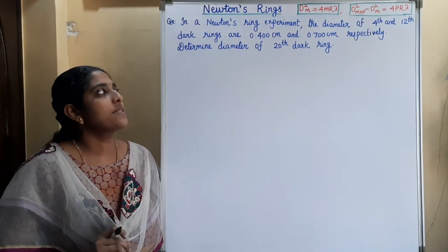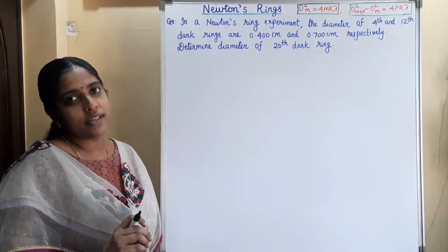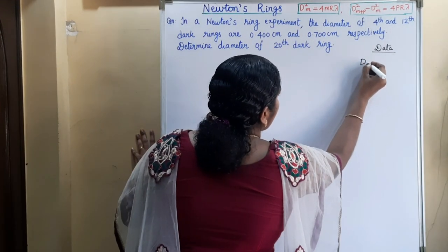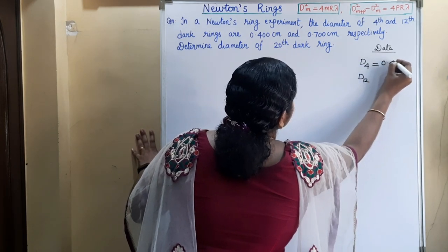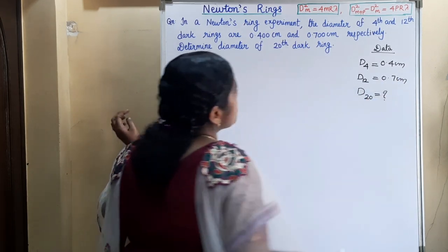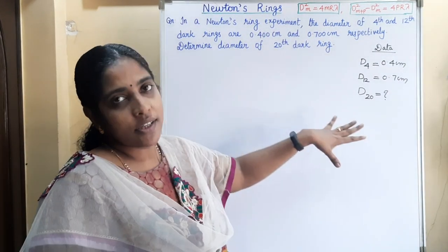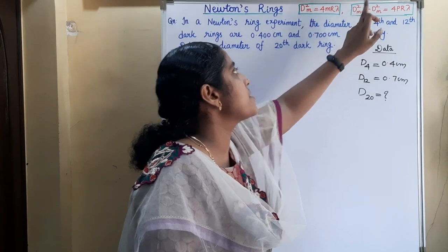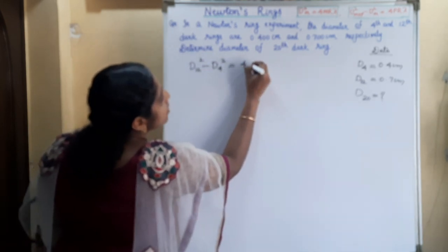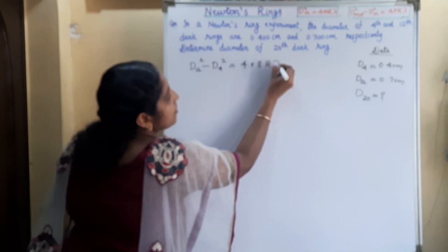Next question. In a Newton's ring experiment, the diameters of the 4th and 12th dark rings are 0.400 cm and 0.7 cm respectively. Determine the diameter of the 20th dark ring. Both radius of curvature and wavelength are not given, so using the two diameters we write: d₁₂² − d₄² = 4 × 8 × Rλ, where p = 12 − 4 = 8. This is equation 1.